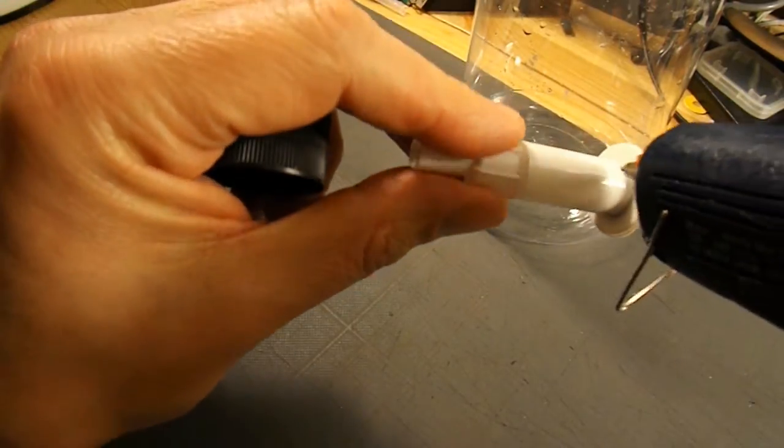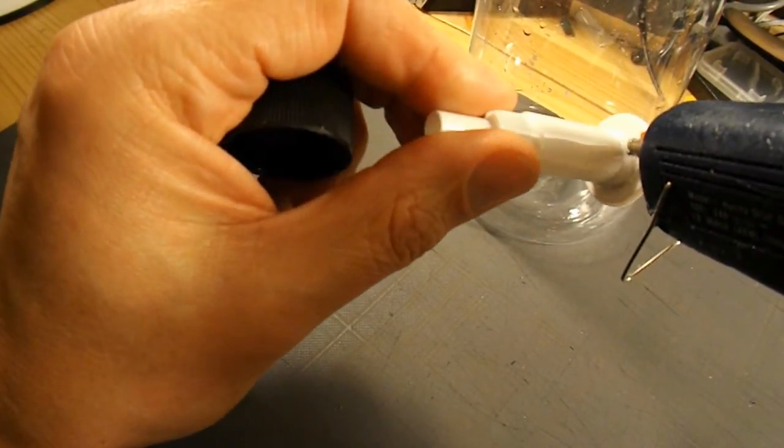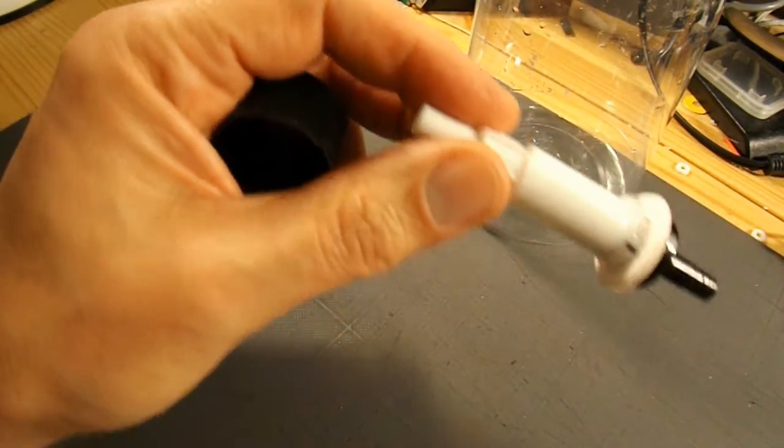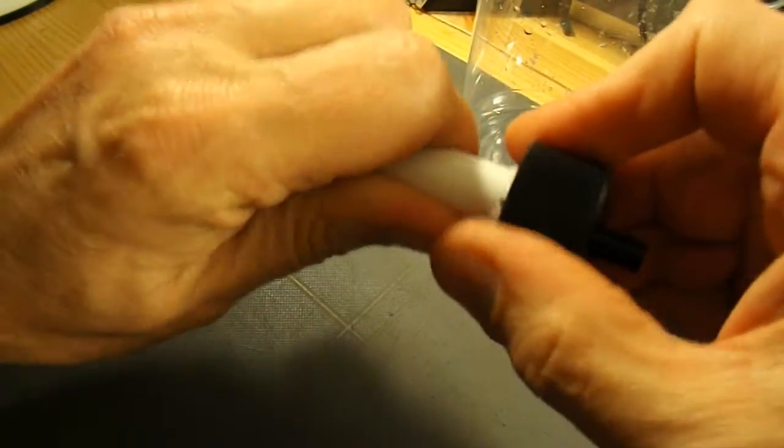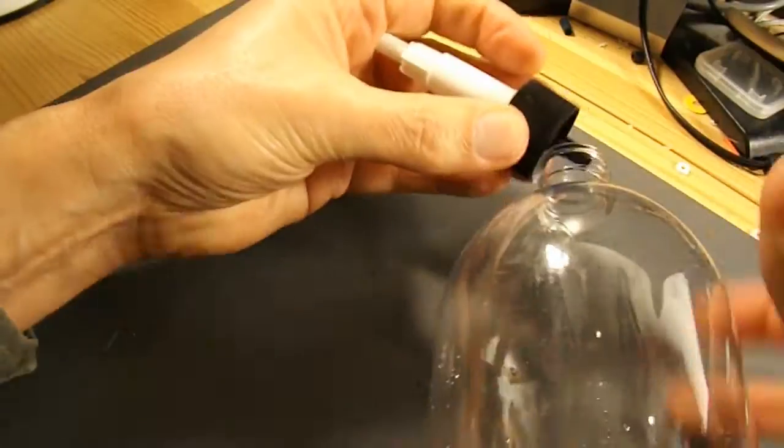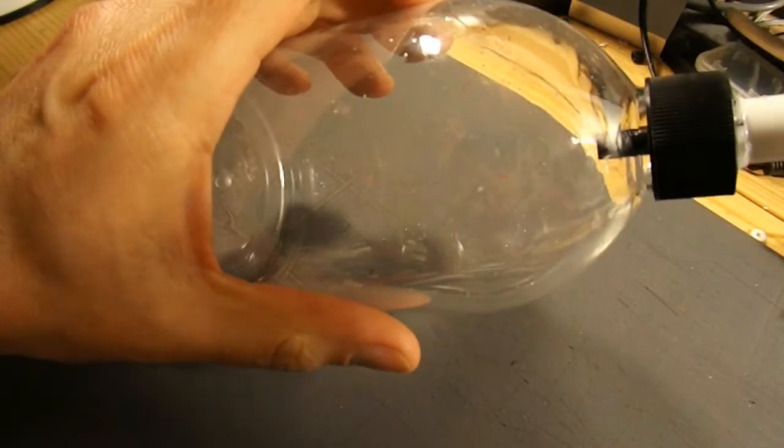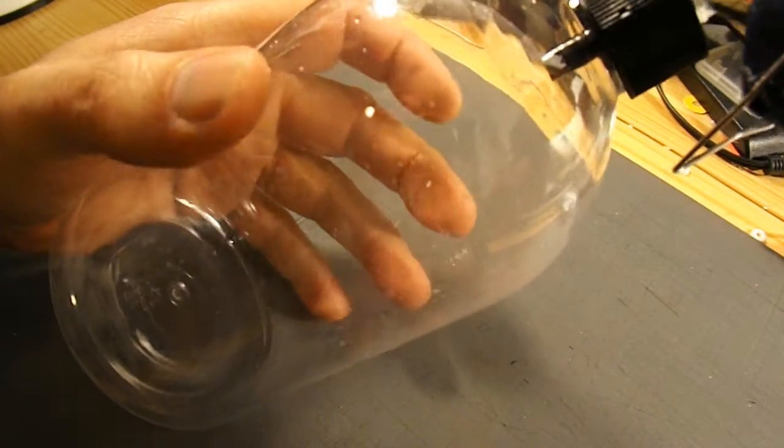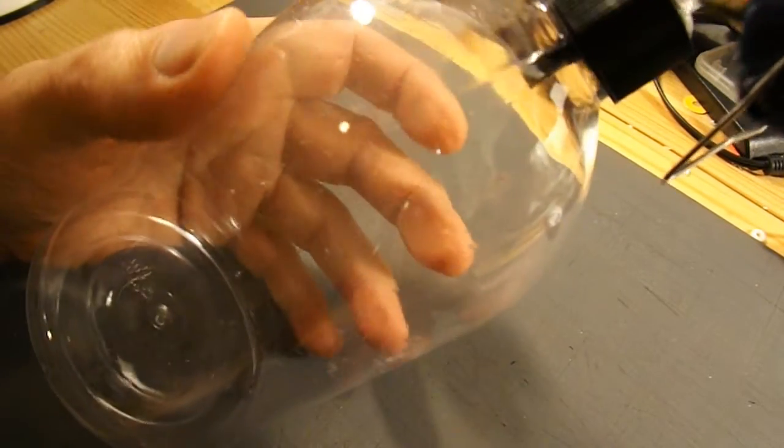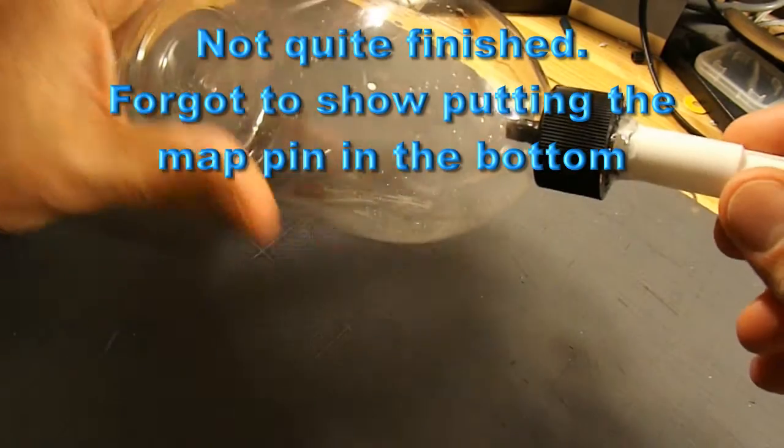So, hot glue gun ready. I'm going to put a bit more hot glue right in there, around the outside, just to make sure. So the purpose of this is to fill those air vents. And there we are. That's the finished article.